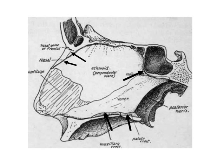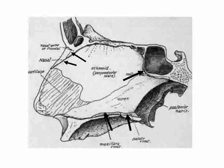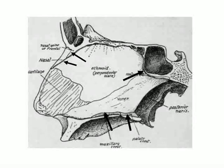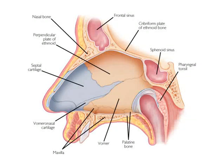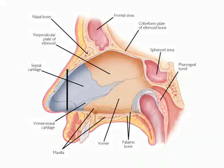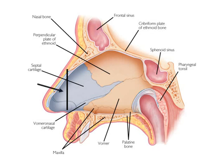There is a small space in between the attachments of the perpendicular plate of ethmoid and the vomer. For purposes of description, the nasal septum cartilage is divided into two by an imaginary vertical line drawn from the spine of the frontal bone to the spine of the maxilla. This divides the cartilage into an anterior half and a posterior half.